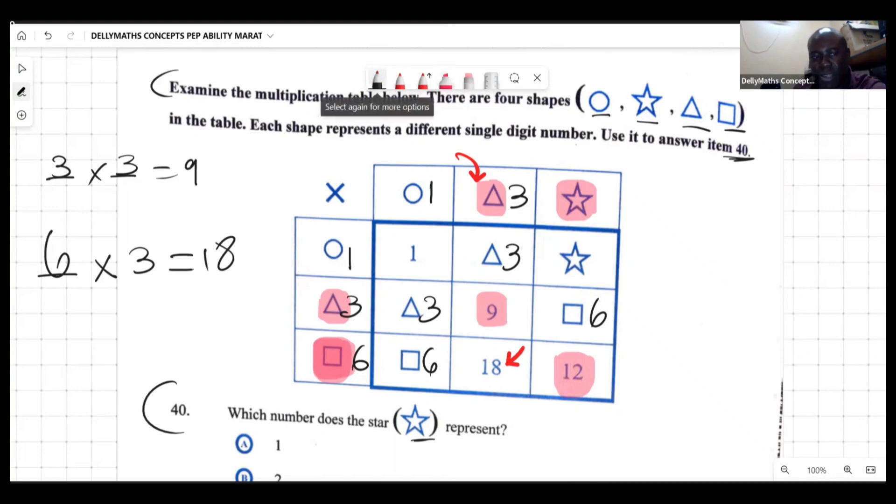Six times what would give us 12? Well the answer has to be two, which means that the star is two. So we're gonna go and look for that answer, and here is the answer: the star is two.